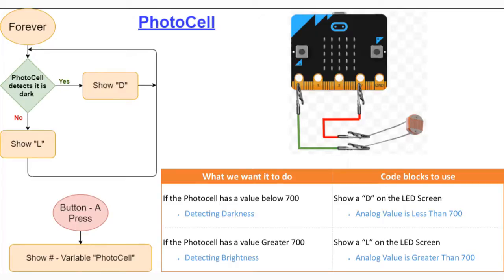If the photocell has a value below 700, we're detecting darkness and will show the D on the micro:bit LED screen. Any value above 700 represents light in the room and we'll show the L. Don't forget to add your button A press event handler in order to test the value of light during real-world testing.